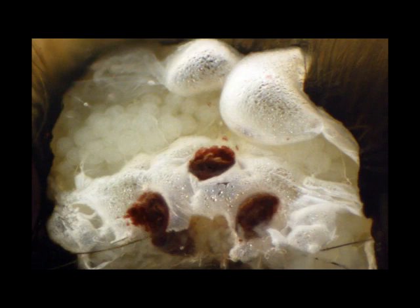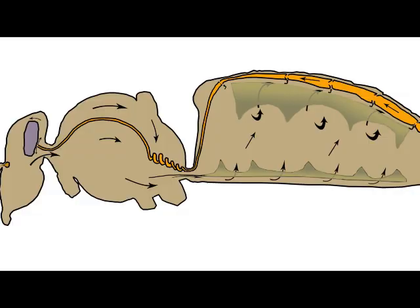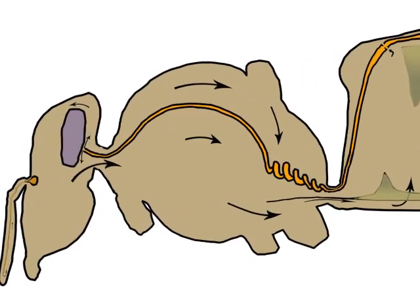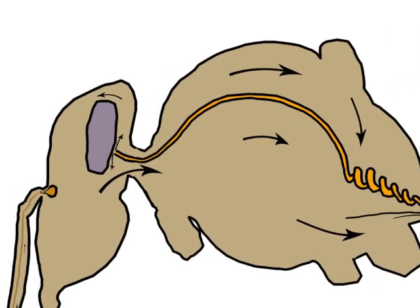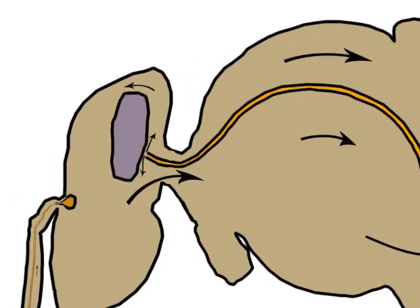The aorta terminates just behind the brain, allowing hemolymph to circulate freely within the head and then back through the connection to the thorax and backwards towards the abdomen.